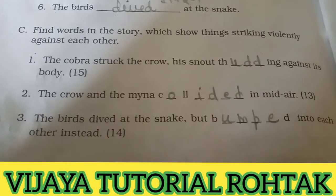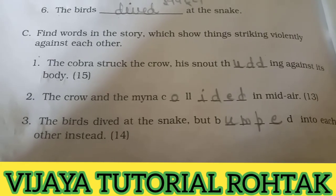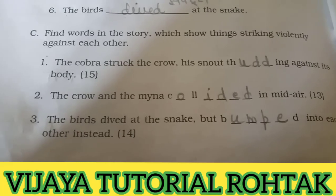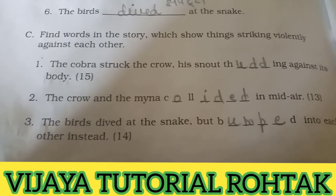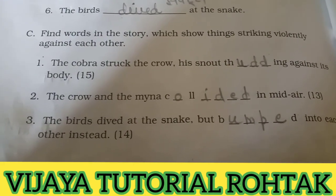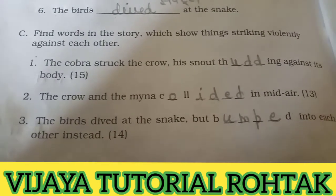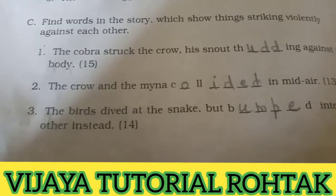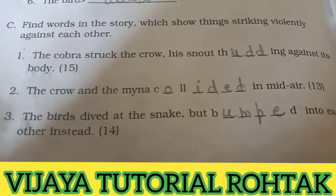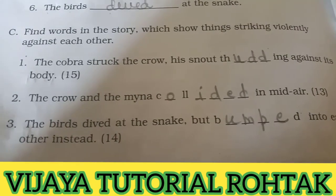This is Exercise C — we have to fill in three words related to striking or collision. Whenever two things collide, we use these three words. First: 'The cobra struck the crow; his snout thudded against its body.' Snout is the mouth and nose area of an animal. When the cobra's snout hit the crow's body, it made a thudding sound — 'thud ki awaaz.'